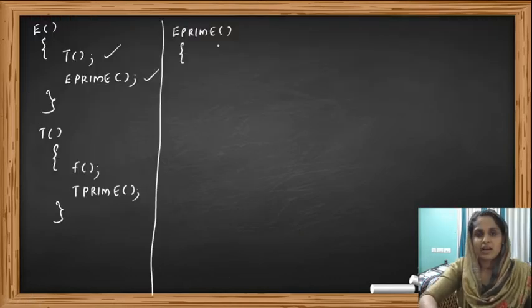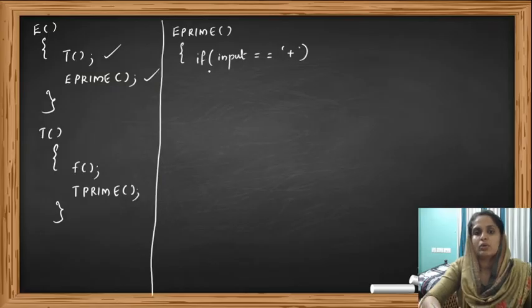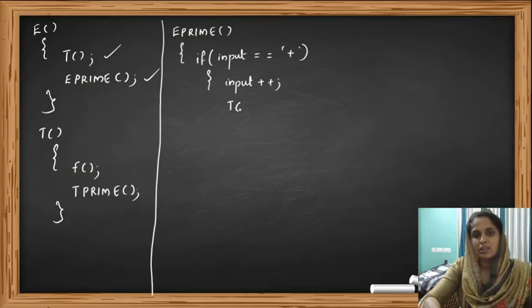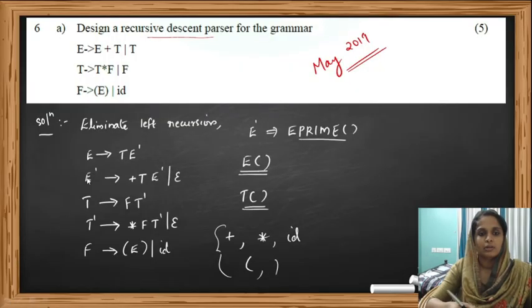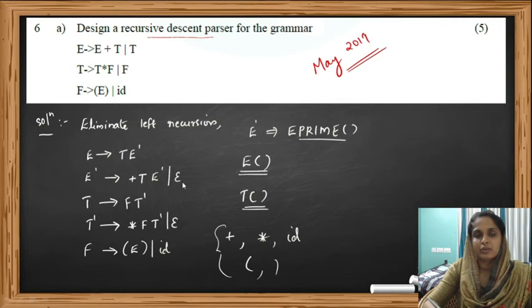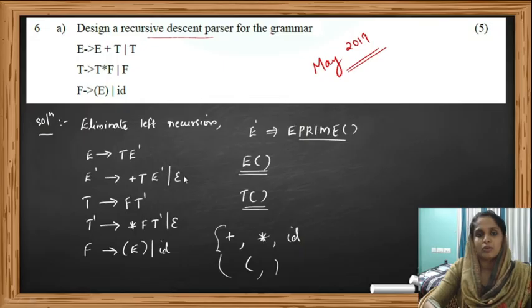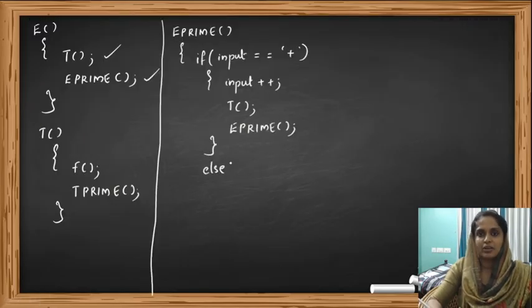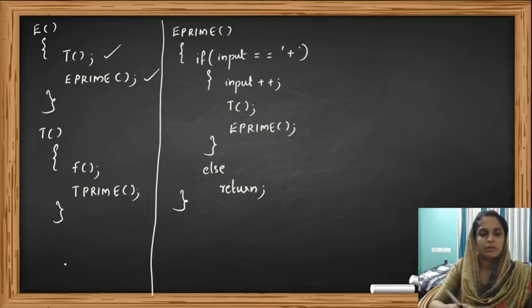We write it as: if input == '+', then input++, call T, call E prime. But there is also an epsilon production. So if the input is plus we do this, otherwise we take epsilon. In the else branch, epsilon means we don't have to do anything — we can just return. That's all for the E prime procedure.